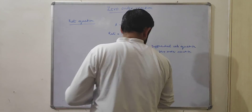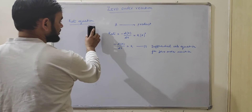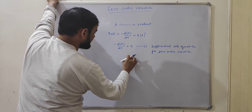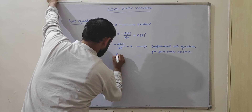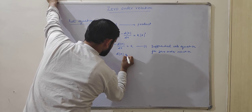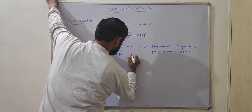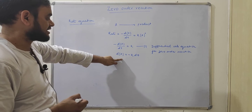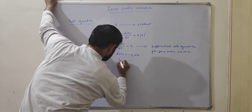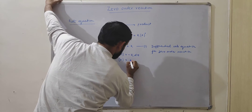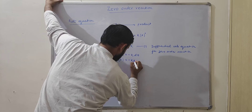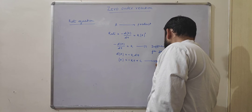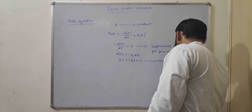This is the differential rate equation for zero-order reaction. In a different way, equation number one can be written as d[A] = −k dt. If we integrate this equation, we will get A = −Kt + C, where C is a constant called the integration constant.